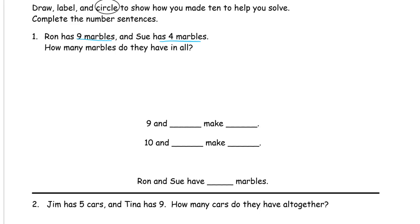So here's Ron's nine. One, two, three, four, five, six, seven, eight, nine. Those are Ron's marbles. And Sue has four. One, two, three, four. That's Sue's marbles. And that's drawing and labeling, right? R for Ron and S for Sue. That's labeling.